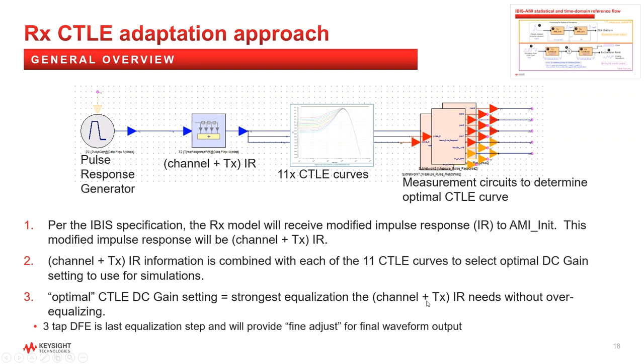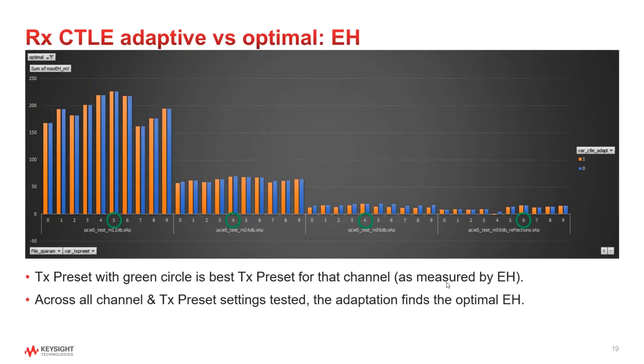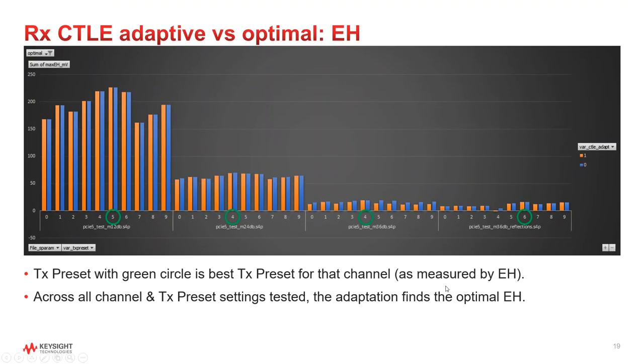Now, let's go back to the data results. Looking at eye height metric, in this graph, the x-axis is channel followed by TX presets 0 through 9.